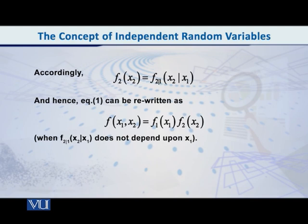So therefore, we get a simple and neat, attractive equation: f(x1, x2) is equal to f1(x1) into f2(x2). That is, the joint PDF is the product of the two marginal PDFs.